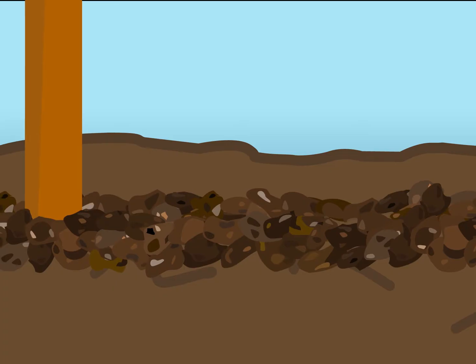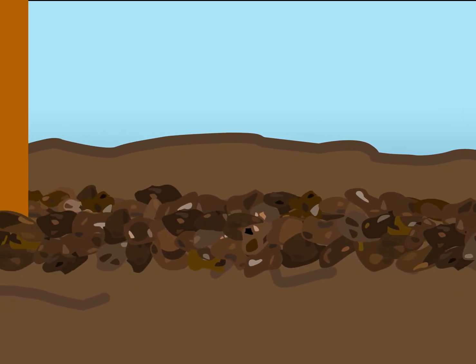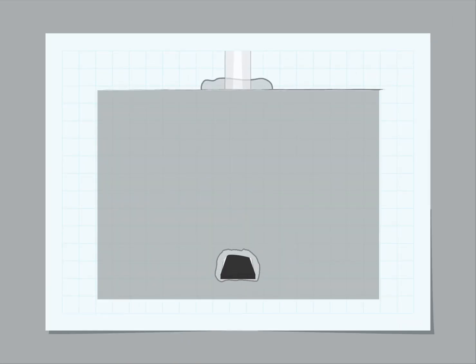The action of the ripping point and tine loosens the soil as it passes through. Fractures are generated from the tip of the point.